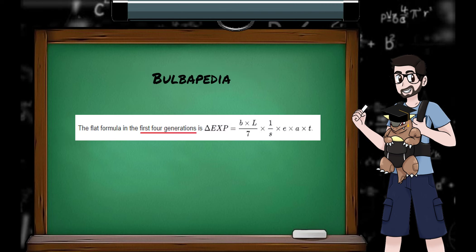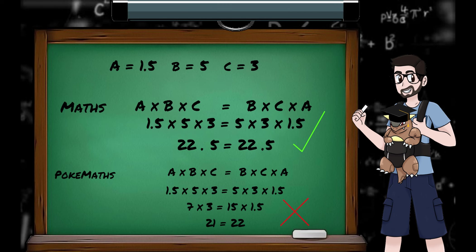And on top of that, Bulbapedia says the Generation 3 formula is used for 1 and 2 as well. Well, I'm afraid Bulbapedia is wrong, and whilst the mathematicians are correct that order of elements in a multiplication doesn't matter, Pokemon mathematicians would disagree. As we're constantly removing decimal places after each part of an equation, the order does in fact matter.